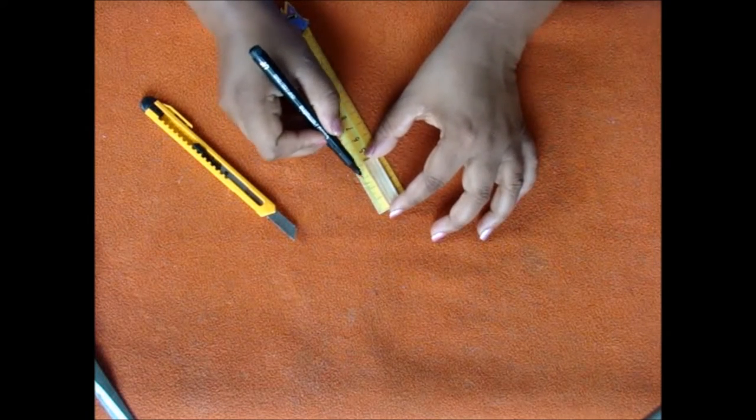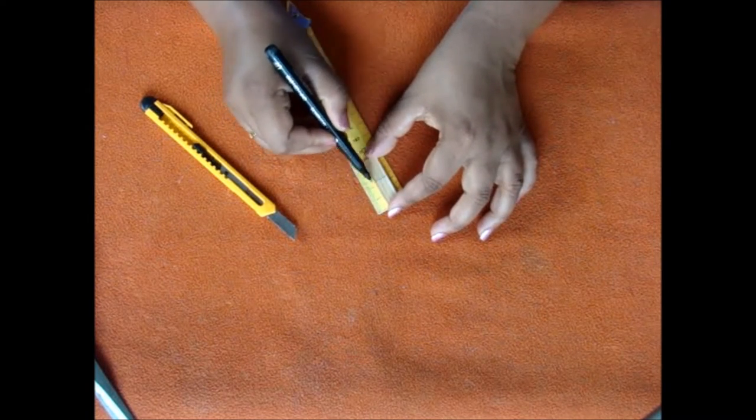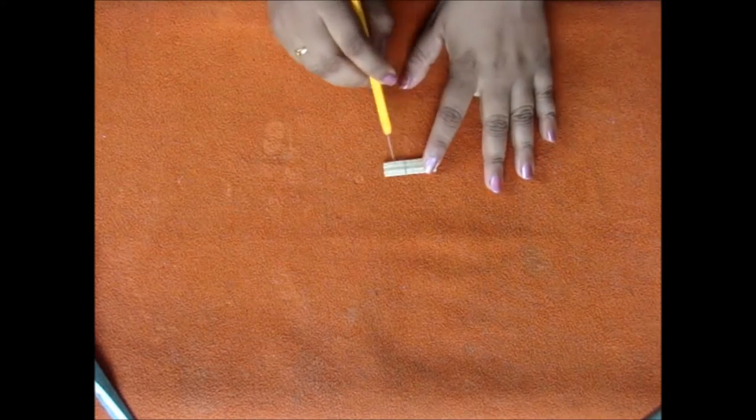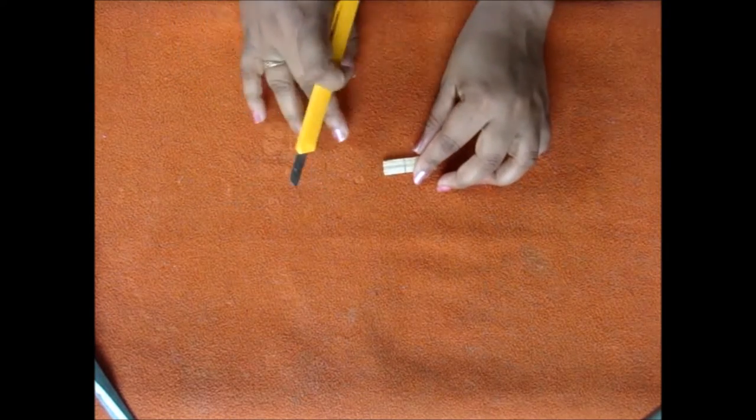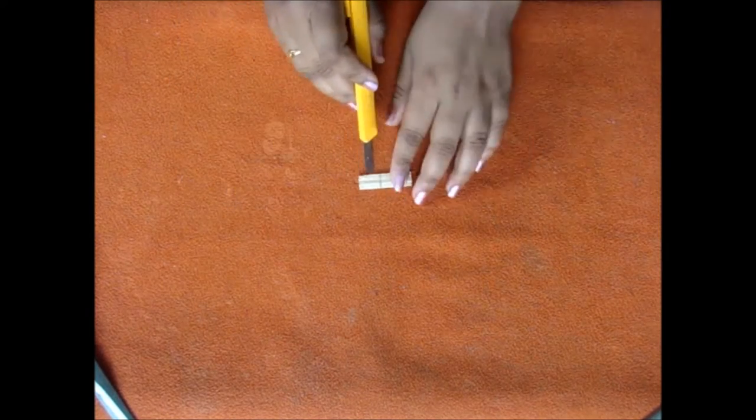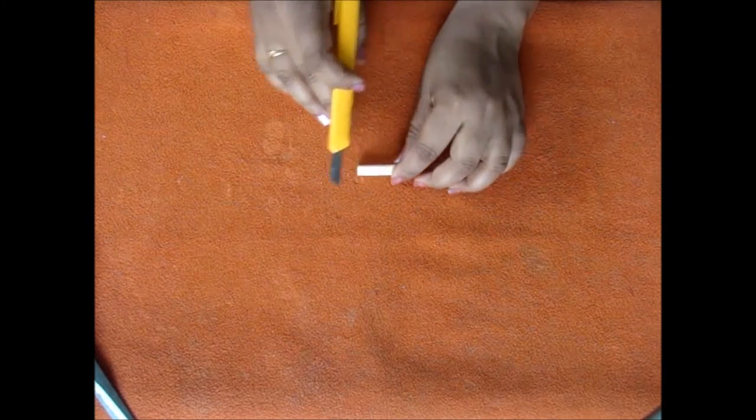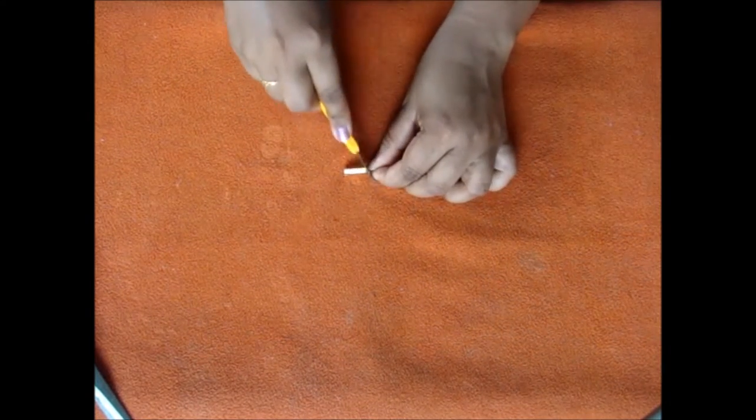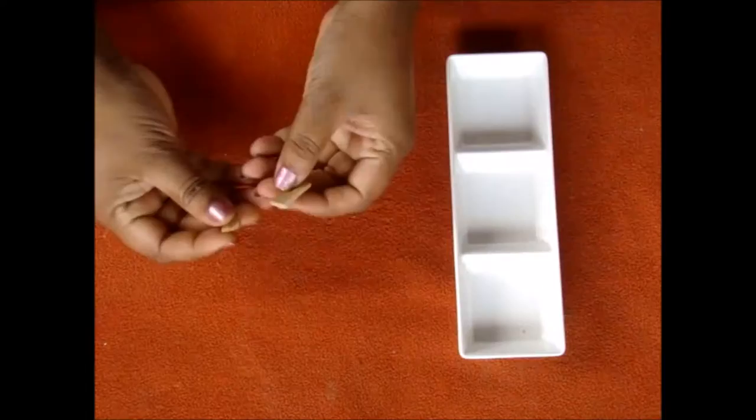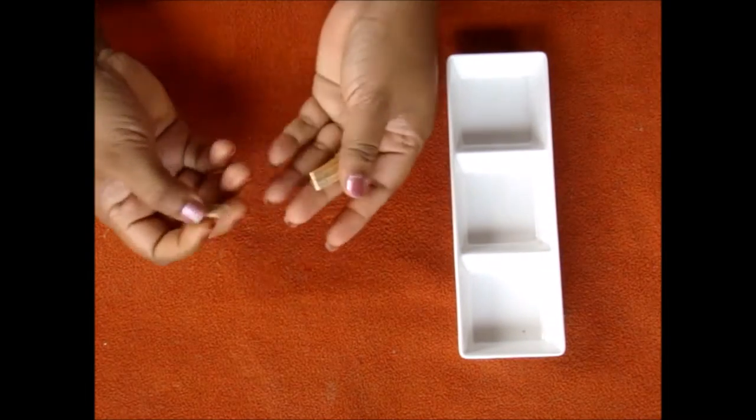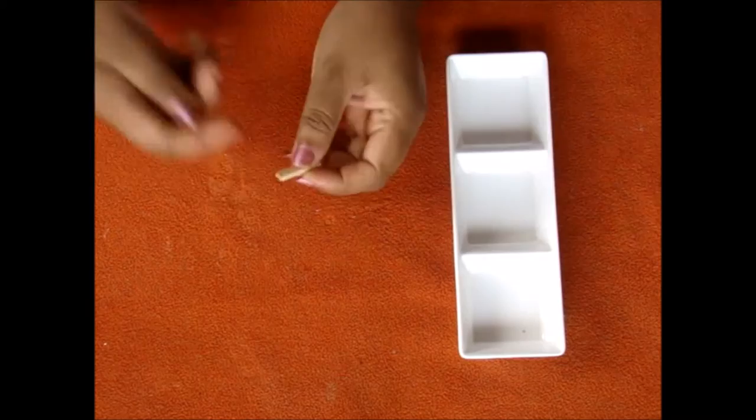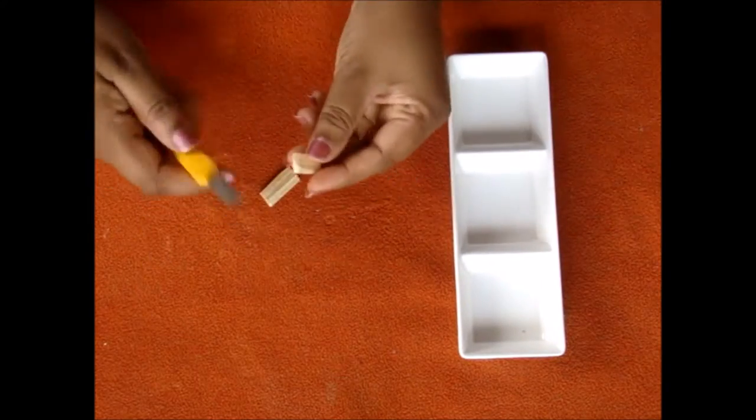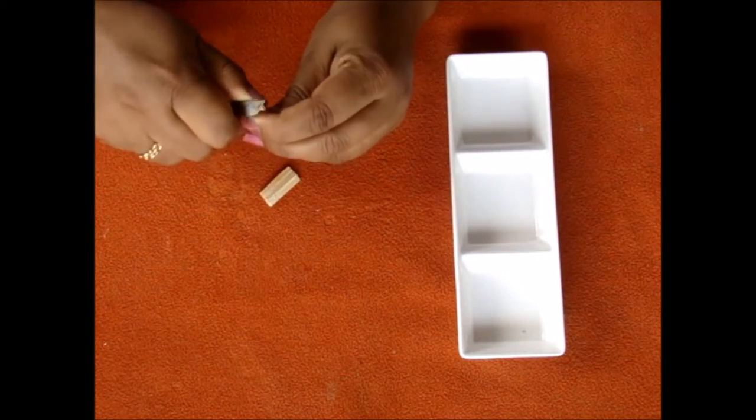Take a scale and measure at around 2.5 centimeters to make the bottom and the other part will be back. Cut slantingly. Be careful while using a cutter. We have two pieces. Now smoothen up with the help of a cutter or a filer so that we can easily fix the backrest.